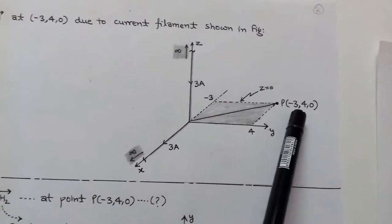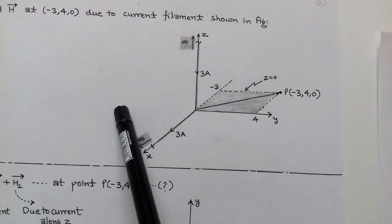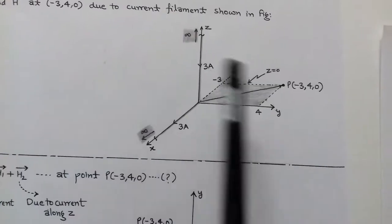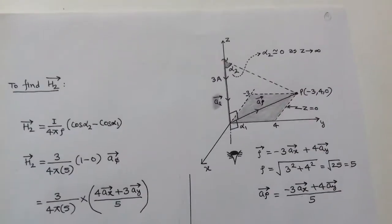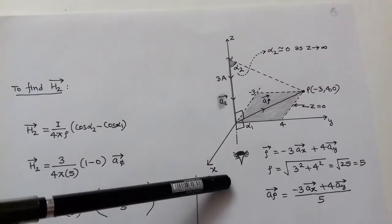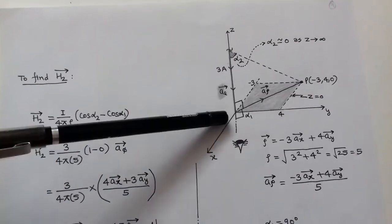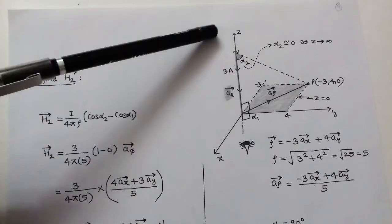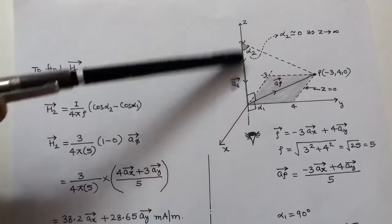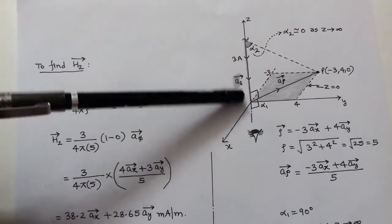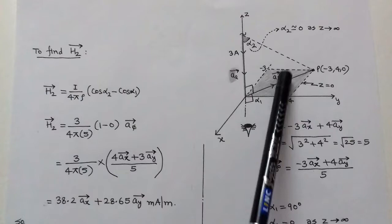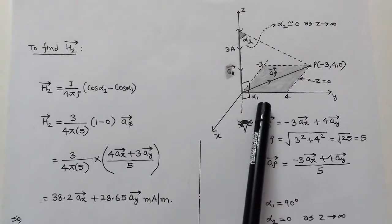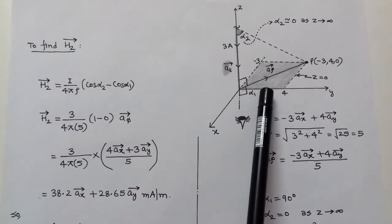In this way, we can determine the magnetic field intensity at any point due to a current filament using Biot-Savart's Law. The key point is how to determine angles α1 and α2: we look towards the positive direction of the line where the current filament is situated, and unit vector rho is always perpendicular to the current filament pointing towards point P.